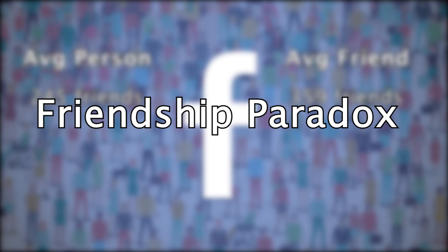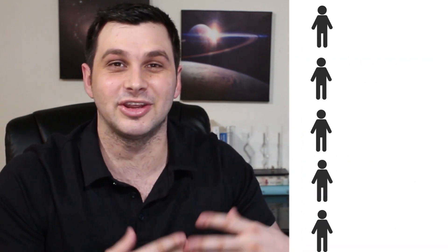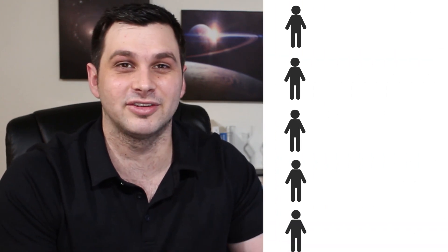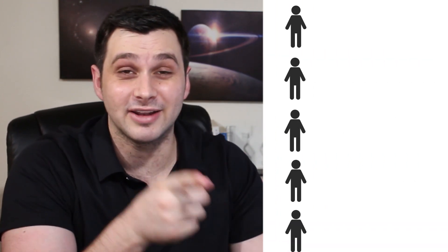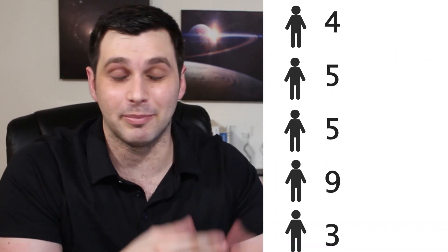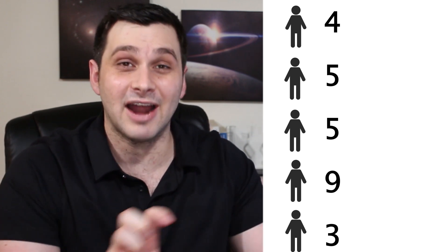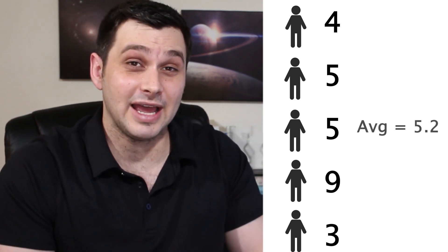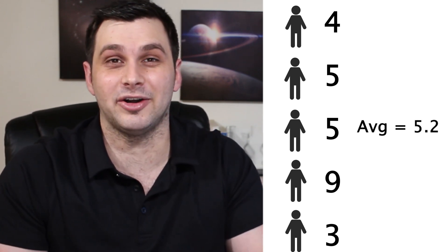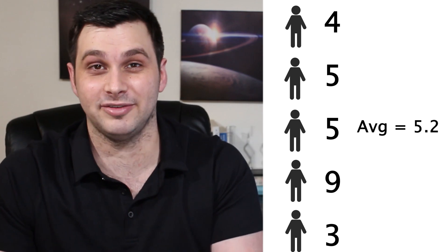Now, it is called a paradox, but really it's just a mathematical truth that isn't obvious at first. I want to note that this is not saying that most of your friends are more popular than you. This is saying that if you lined up all your friends — let's say you have five friends — and then counted how many friends they each had, and then averaged those numbers, it would likely be higher than five, the number of friends you have.